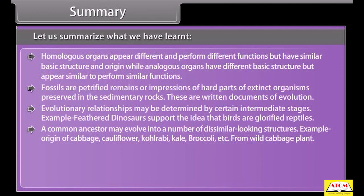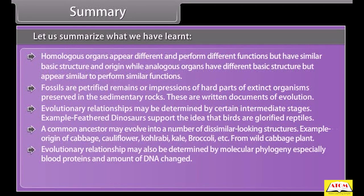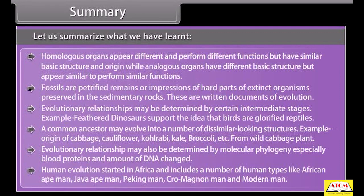A common ancestor may evolve into a number of dissimilar-looking structures — for example, the origin of cabbage, cauliflower, kohlrabi, kale, and broccoli from the wild cabbage plant. Evolutionary relationships may also be determined by molecular phylogeny, especially through blood proteins and the amount of DNA changed. Human evolution started in Africa and includes a number of human types like African ape-man, Java ape-man, Peking man, Cro-Magnon man, and modern man.